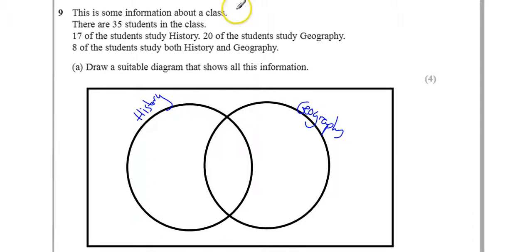So, let's put information. Now, I find it's quite easy to start with the ones that study both history and geography. And that's 8. And then you put that in the middle. That's my starting point.